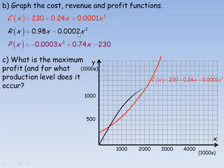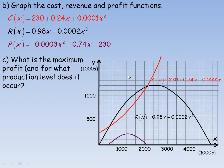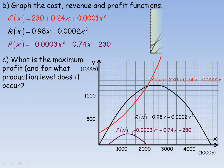The revenue function is a negative quadratic that starts at 0. The profit function has the shape derived previously. The red function is cost and the black function is revenue. Where revenue exceeds cost, there is a profit. The highest profit occurs at about x equals 1,200 — that is where the difference between the two functions is greatest.